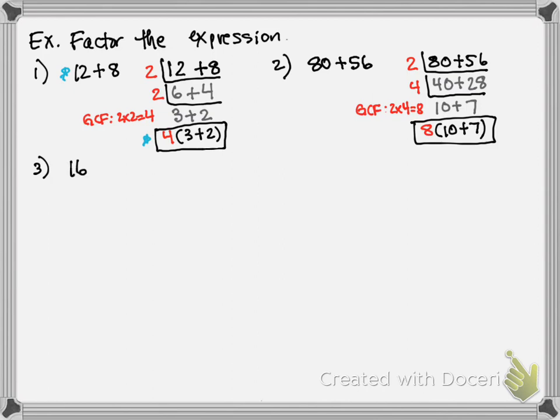Let's do one with some variables. We have 16 plus 4x. I'm going to write it over here. Put my ladder in. And, I notice 4 can go into both of those. So, that gives me 16 divided by 4 is 4. 4 divided by 4 is 1. 1 times x is x. There's no other common factors. So, that was pretty simple. GCF is just 4. So, we're going to have 4 times the remaining expression, 4 plus x.